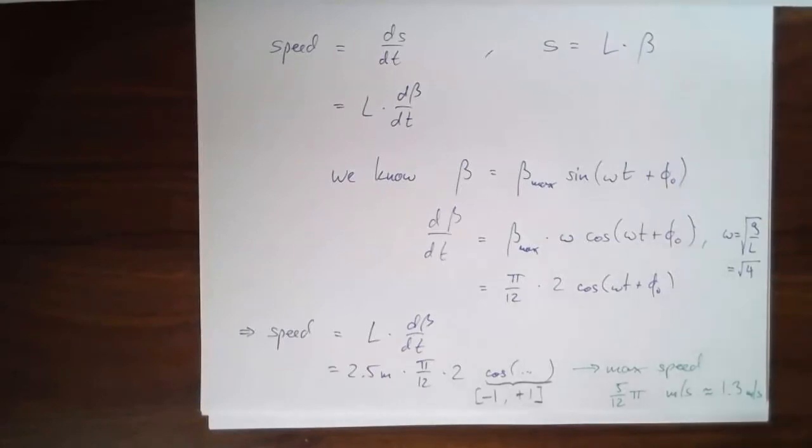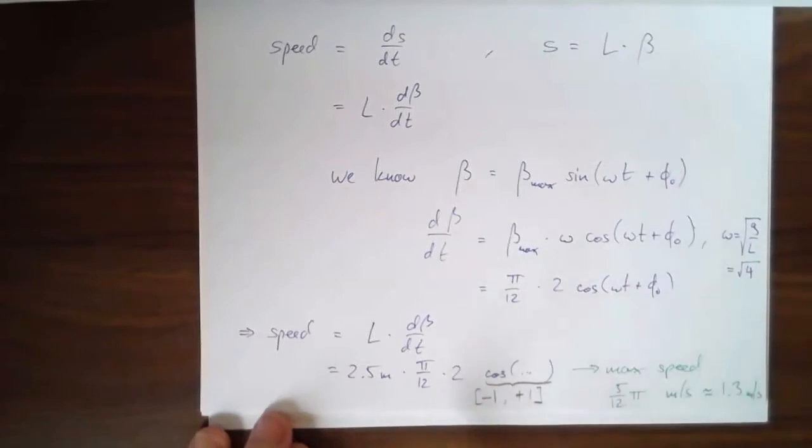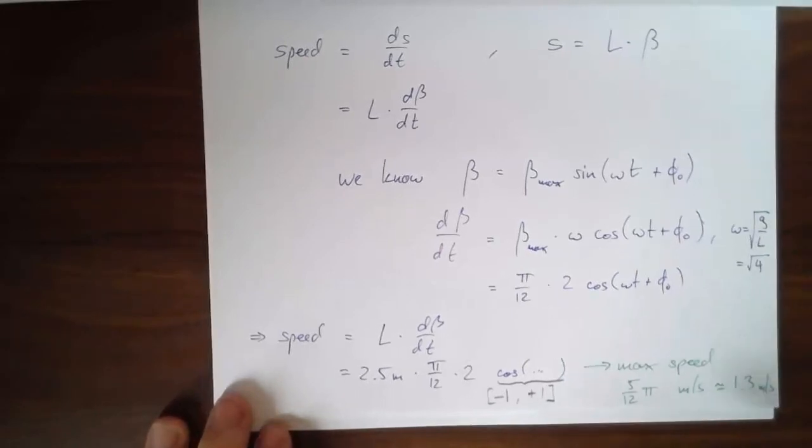Now, another way you could actually work this out is by thinking about what height does the pendulum gain as it moves up, like just literally the height above the lowest point, the vertical height, and you can work with gravitational and kinetic energy, gravitational potential and kinetic energy to figure it out what the maximum speed is. Then you get a very similar answer, maybe not exactly the same, because for our calculation, what we made the approximation that beta is always small, we made the small angle approximation. Okay.